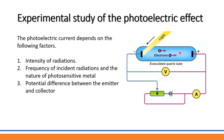The photoelectric current depends on three factors. First, the intensity of radiation. Second, the frequency of incident radiation and the nature of the photosensitive metal. Third, the potential difference between the emitter and the collector.